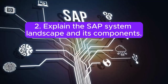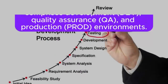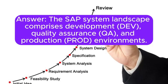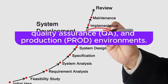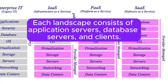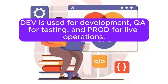Question 2: Explain the SAP system landscape and its components. The SAP system landscape comprises development (Dev), quality assurance (QA), and production (Prod) environments. Each landscape consists of application servers, database servers, and clients. Dev is used for development, QA for testing, and Prod for live operations.